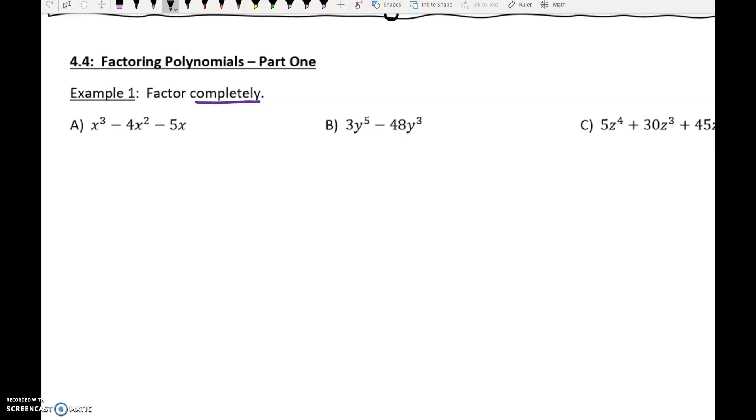Anytime it says factor completely, there's usually more than one step. The first thing you should always check is the greatest common factor. Do these three terms have anything in common? All three of them have an x, so we can pull an x out of all of them. The first term doesn't have a coefficient, so we can't pull any numbers out, but we can pull an x out.